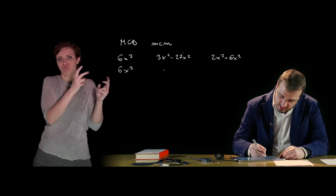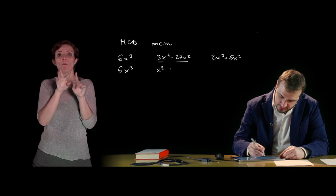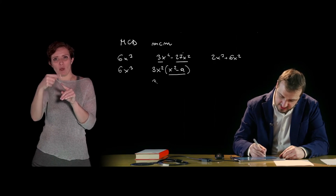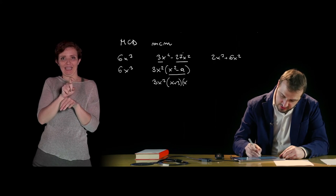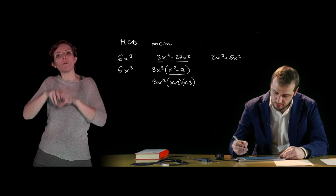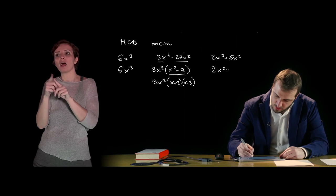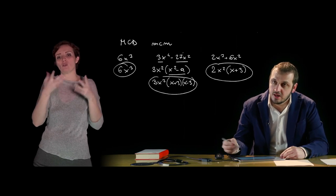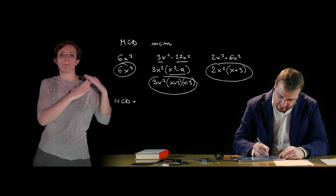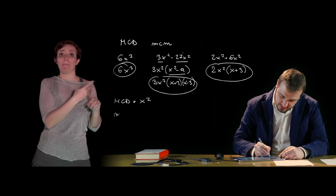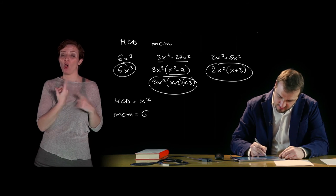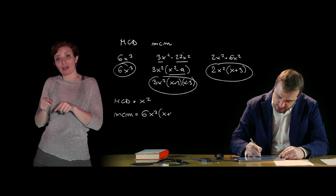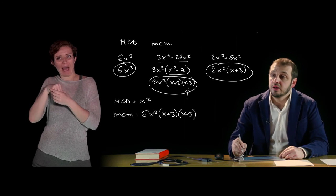Facciamo un esempio con tre polinomi. Scomponendo: il primo dà 3x²(x² − 9) = 3x²(x + 3)(x − 3); il secondo si scompone raccogliendo x² e riconoscendo una differenza di quadrati: 3x²(x + 3)(x − 3); il terzo raccogliendo 2x² dà 2x²(x + 3). Il massimo comun divisore è x². Il minimo comune multiplo è 6x³(x + 3)(x − 3), prendendo tutti i fattori irriducibili con l'esponente maggiore.